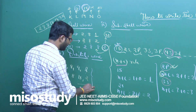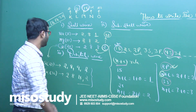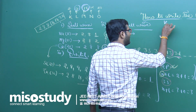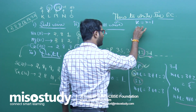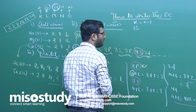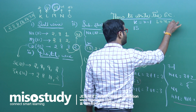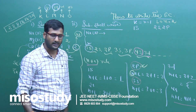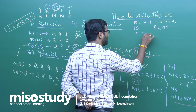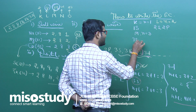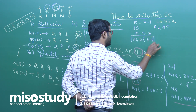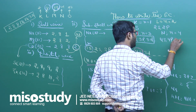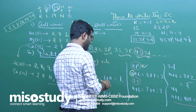Writing sub-cell wise for sodium: K (n=1) has only one sub-cell, so we start from 1s. L (n=2) has 2s and 2p. M (n=3) has 3s, 3p, and 3d. N (n=4) has 4s, 4p, 4d, and 4f — four sub-cells. S can contain a maximum of 2 electrons, P a maximum of 6, D a maximum of 10, and F a maximum of 14.